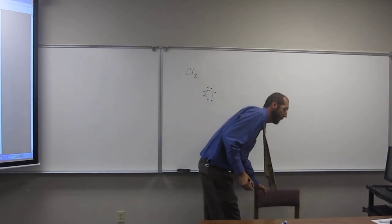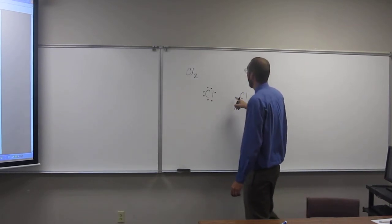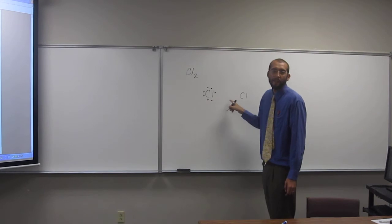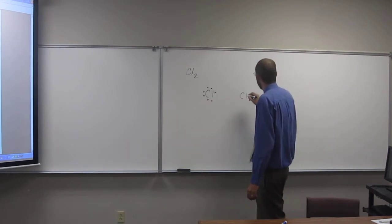And the other chlorine, how many does it have? Seven. Seven as well. So what I tend to do is make the spots next to each other, the spots where the two electrons are missing next to each other.